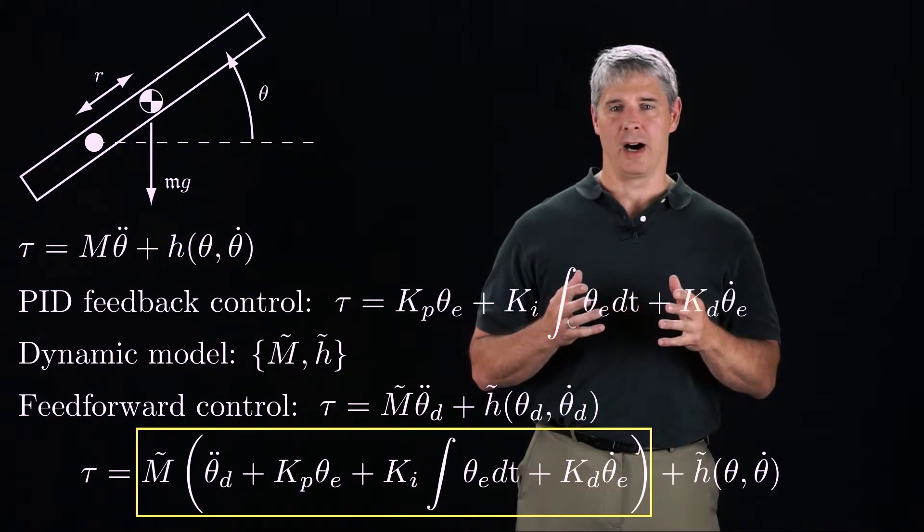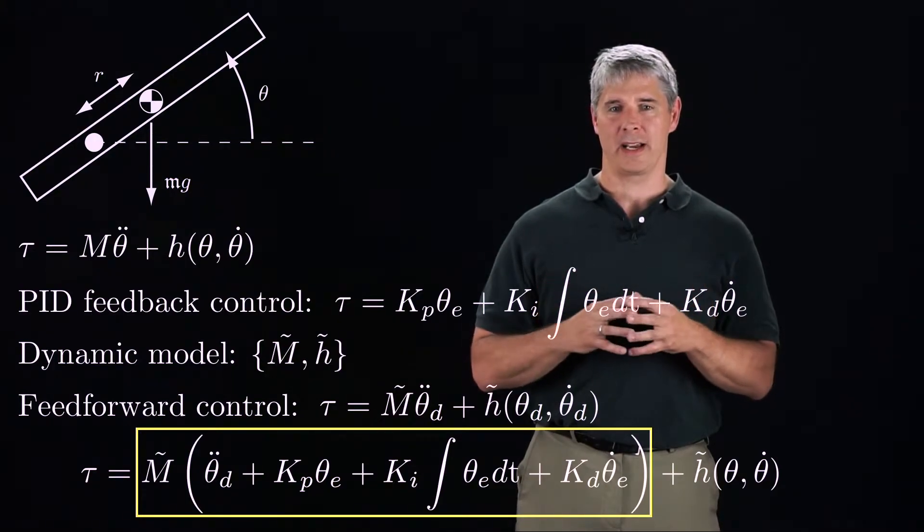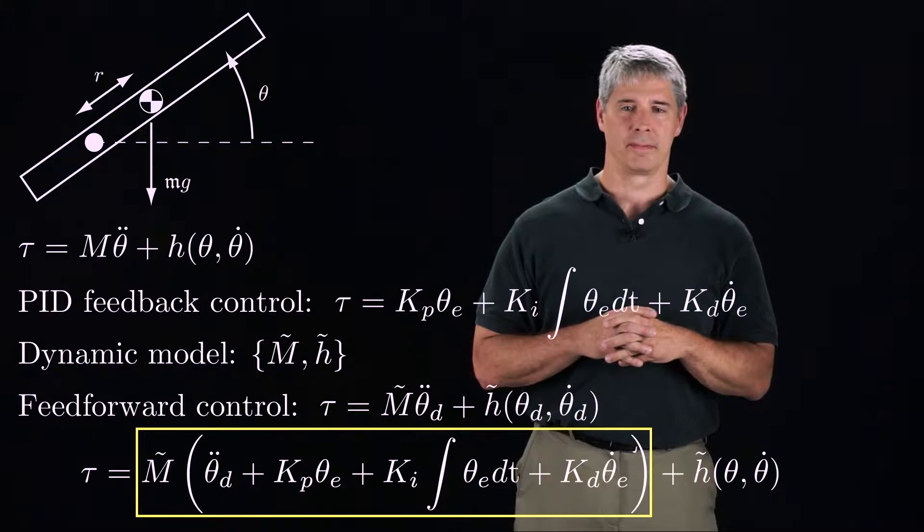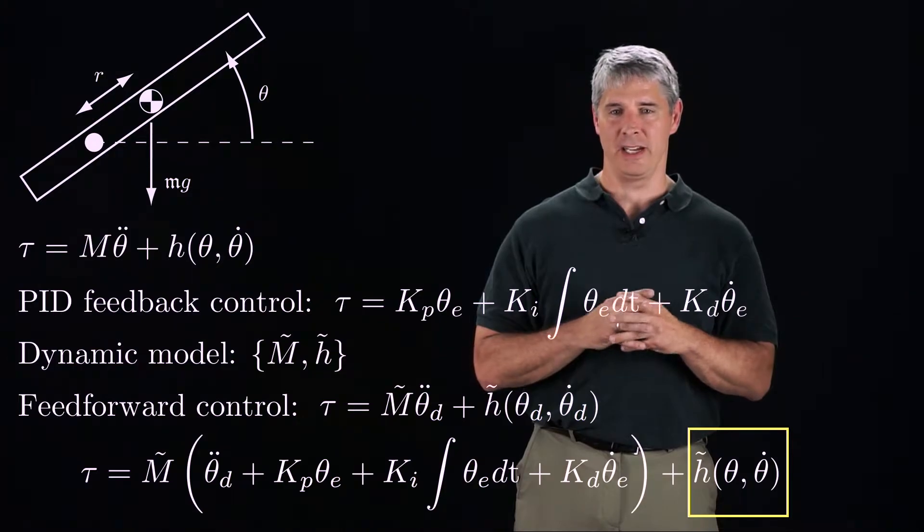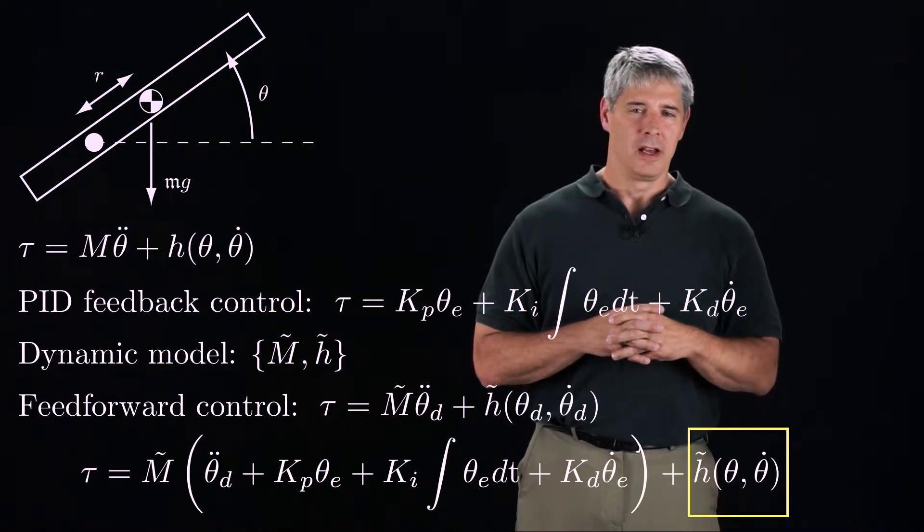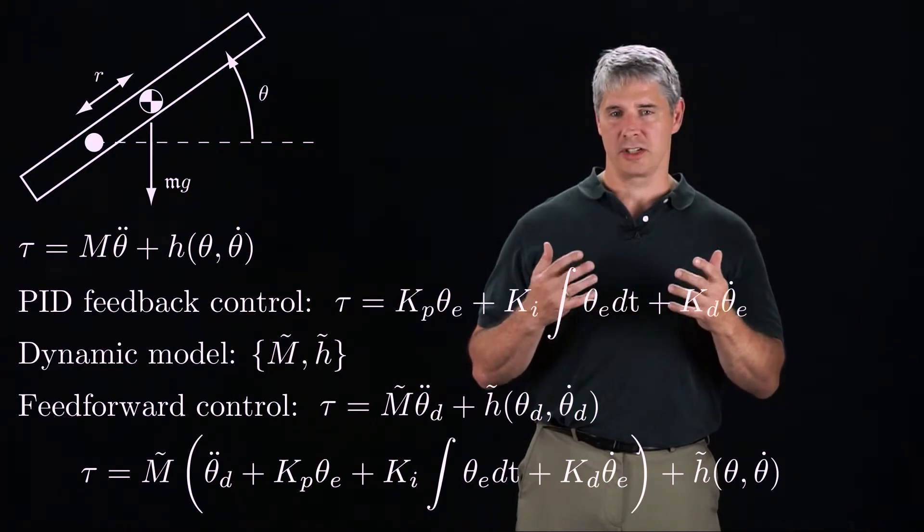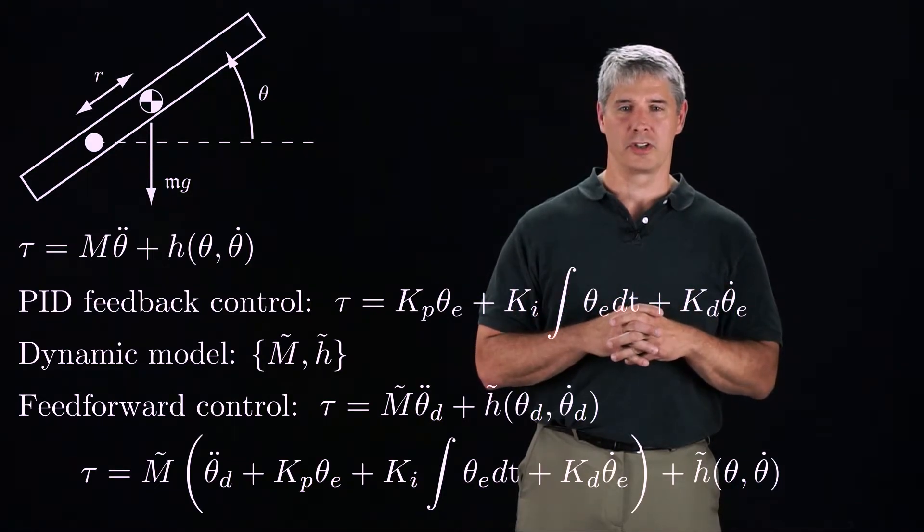The M tilde model turns the feedforward plus feedback acceleration into a joint torque. The second term of the control law provides the torque H tilde that is estimated to be needed to balance friction and gravity at the current state. Notice that if the error is always zero, this control law reduces to the feedforward controller.